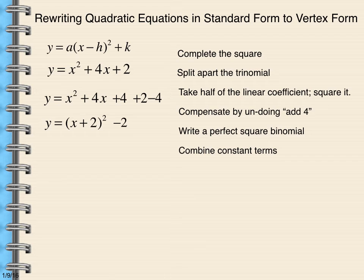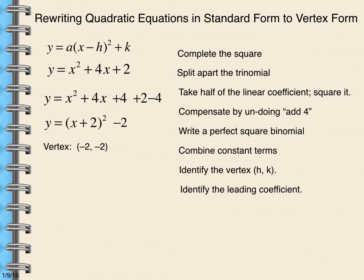So now I have my vertex. I can identify it, which is h, k. So negative 2, negative 2. That's my vertex. My leading coefficient is going to be 1. And I know that this curve opens up. So I have the two pieces of information that I need. The vertex is negative 2, negative 2. And I know that it opens up. And I know that it's the usual width because the leading coefficient a is 1.